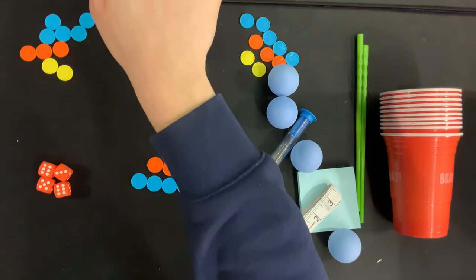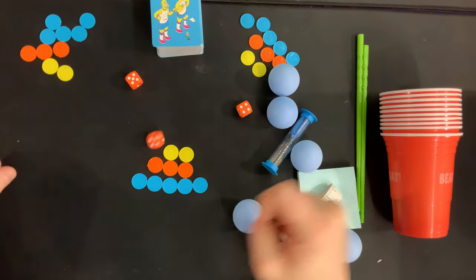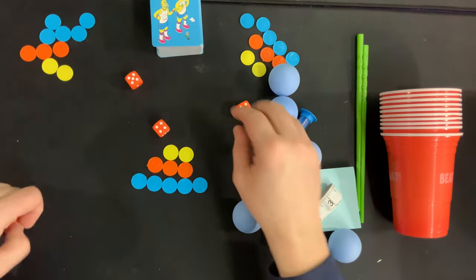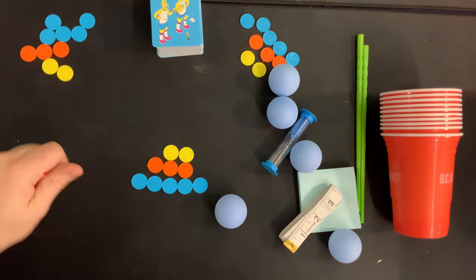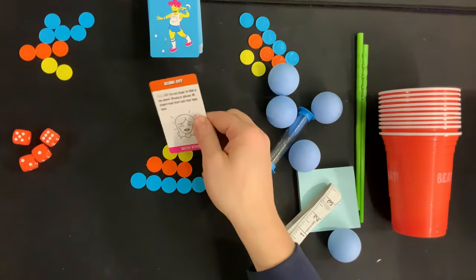Next what you're going to do is you are going to all roll the dice and the person who gets the highest roll is going to go first. If you get a tie then roll off. And the person who had the highest die roll is then going to grab the top card of the deck and then read it out loud.